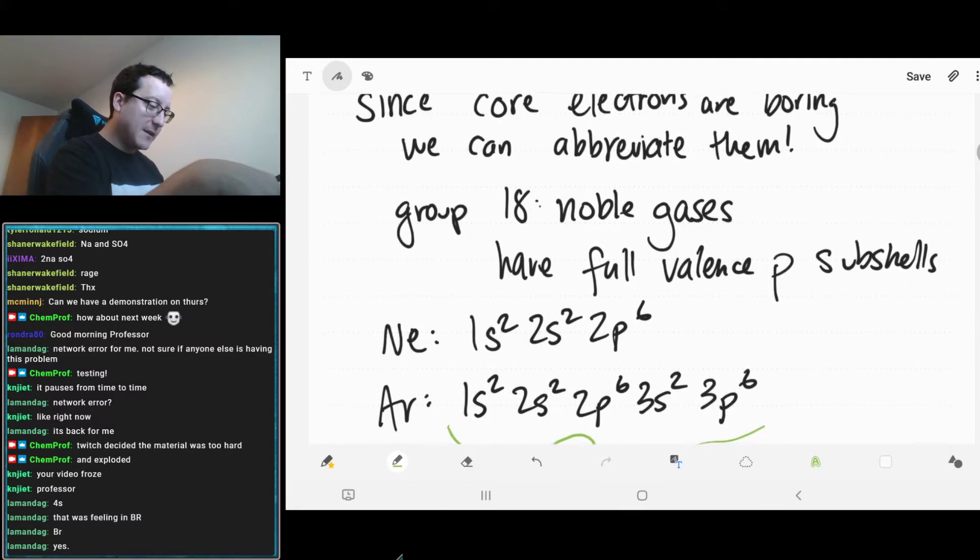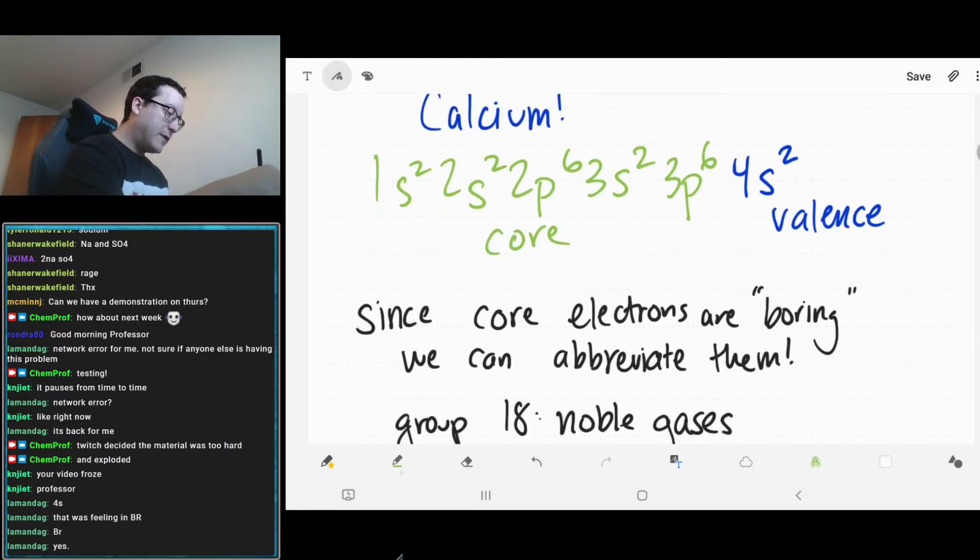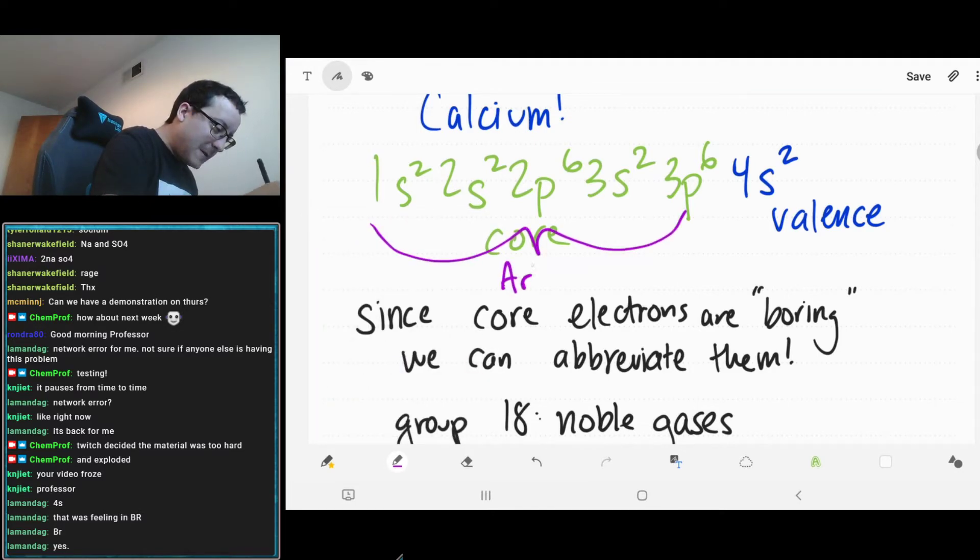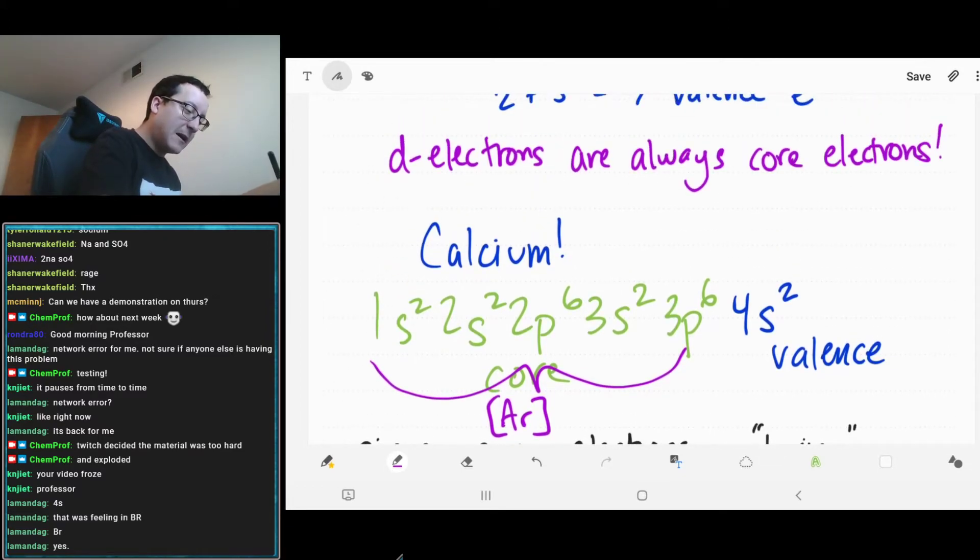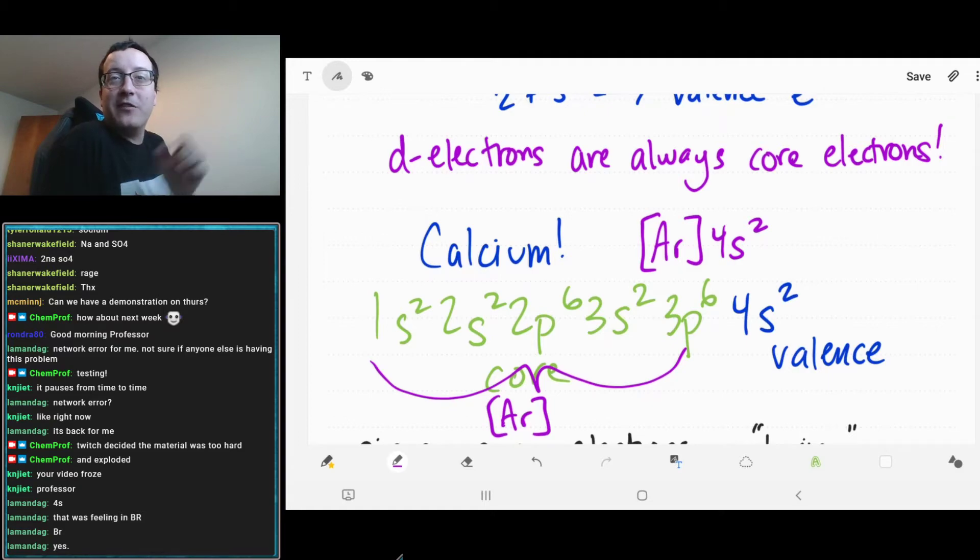And they all have full valence p subshells. Let's see, argon will have... Just putting these out there. We can say, okay, look at this. And if we go back up to our calcium, we say, oh, look, all of this stuff is the same as argon, argon's electron configuration. And so, one way to talk about calcium is just to write argon 4S2.